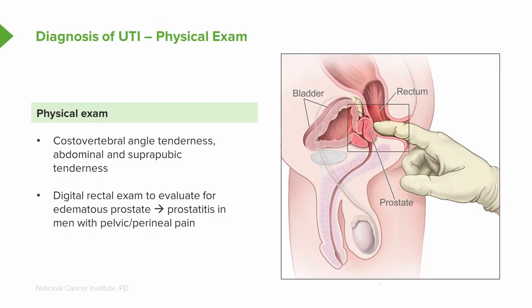Costovertebral angle tenderness or abdominal and suprapubic tenderness are going to be common in patients who have urinary tract infection. A digital rectal exam to evaluate for an edematous prostate is going to be helpful for prostatitis in men with pelvic or perineal pain.